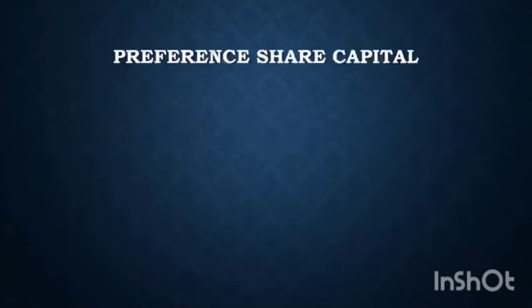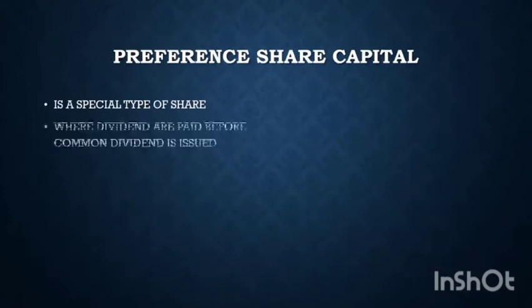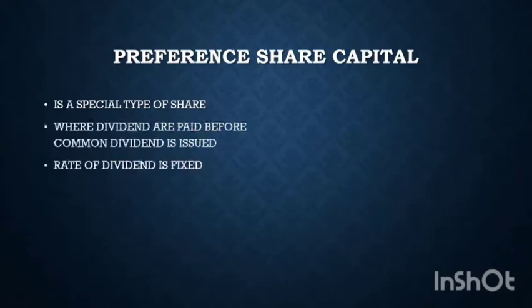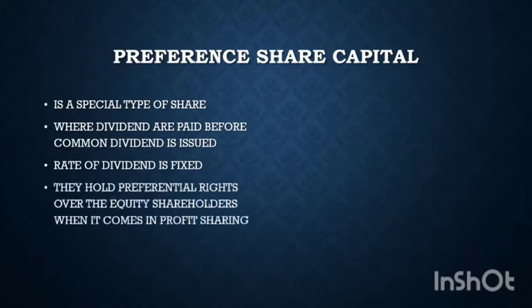Preference Share Capital is a special type of share where dividends are paid before common dividends are issued. The rate of dividend is fixed. Preference shareholders hold preferential rights over equity shareholders when it comes to profit sharing.